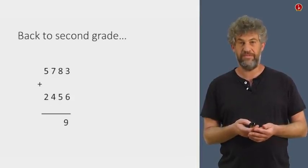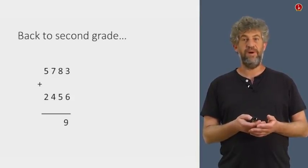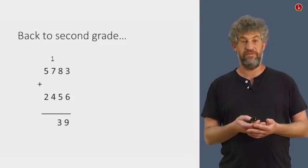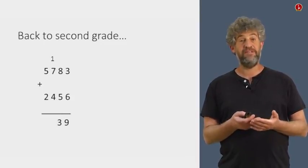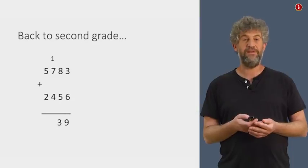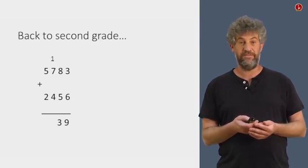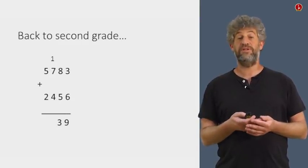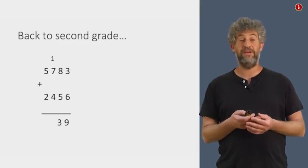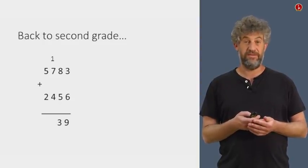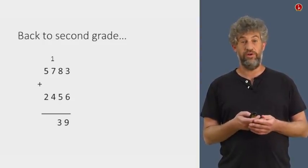But now what happens when we do the next digit and we have eight plus five? Well, eight plus five is 13, and we cannot write 13 underneath the 10th position because 13 is greater than 10. So we all learned this important and amazing trick of writing only three and having one as a carry to the 100th place. And then we know how to continue from there.